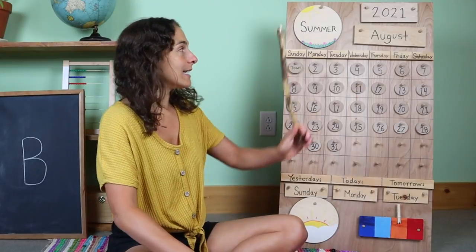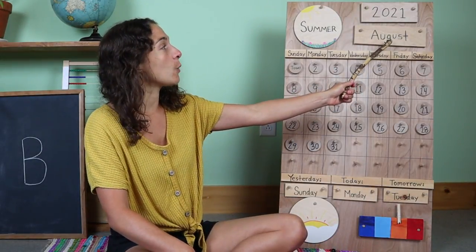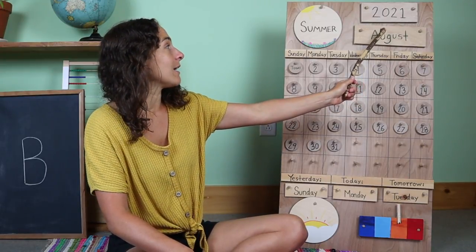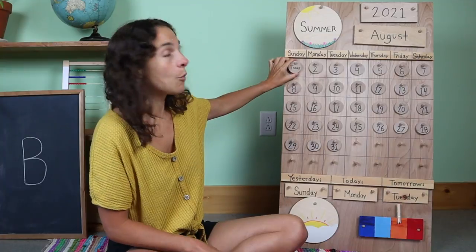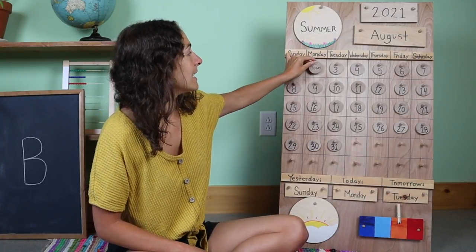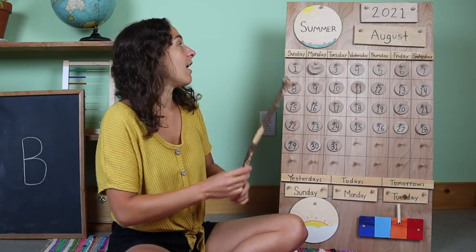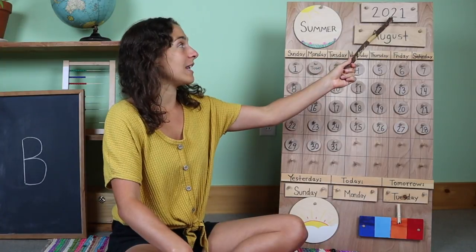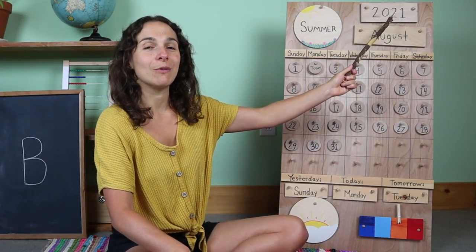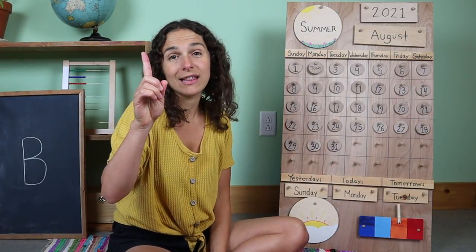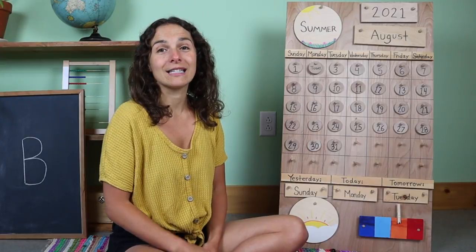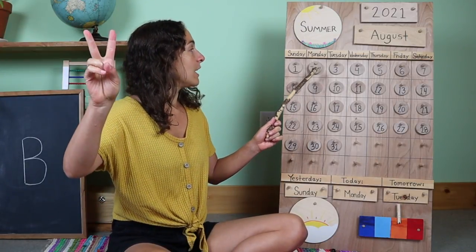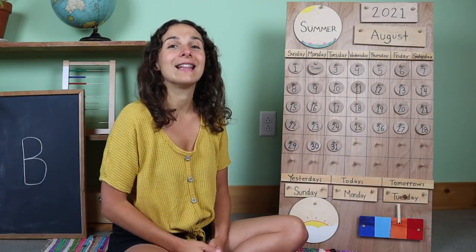Behind me I have the calendar and weather chart. The first thing that we're going to do is go over the date. Here's the month — we have a brand new month up here. Today is August 2nd. Yesterday was the first day of August, and today is the second day of August — August 2nd. And the year is 2021. Let's get out our counting fingers. How many days have we had so far in the month of August? Will you count with me? One, two. We have had two days so far in the month of August.